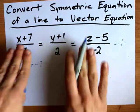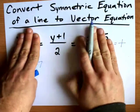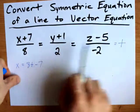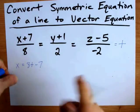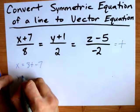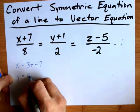See? Now I'm going to ignore these two and use this equation y plus 1 over 2 equals t. Multiply both sides by 2 and subtract 1. I get y equals 2t minus 1.